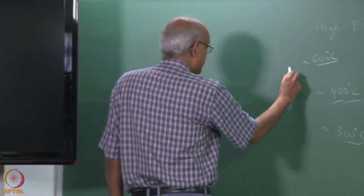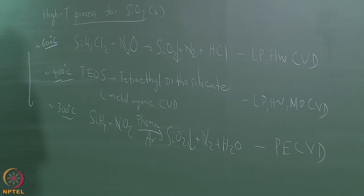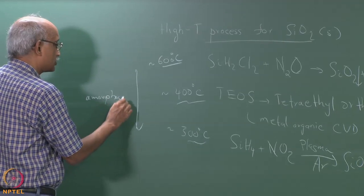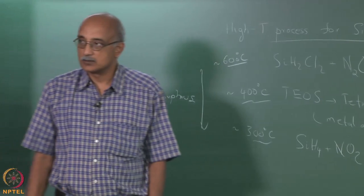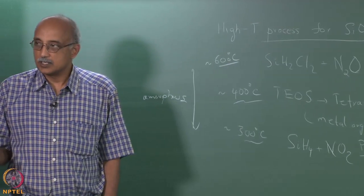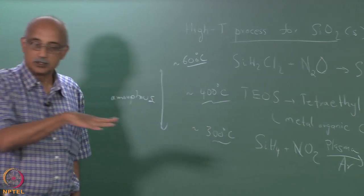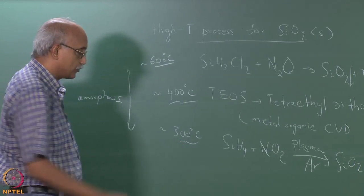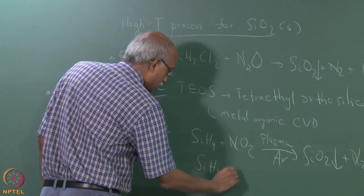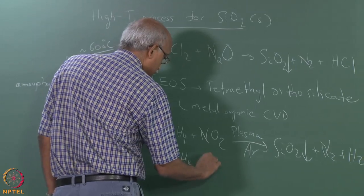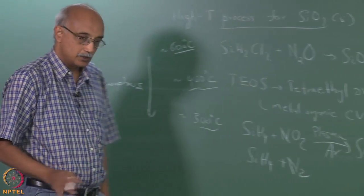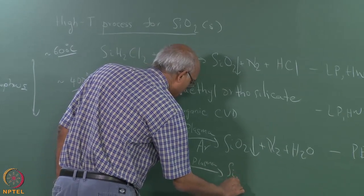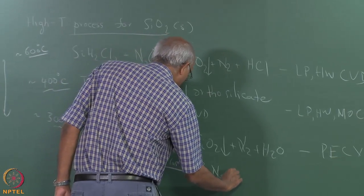As you go from the high-temperature process to PECVD, the films become more amorphous. So depending on how amorphous you want the film to be, you can choose to operate at any of these regimes. For Si3N4, processes are available at various temperature ranges. One widely used process runs at very low temperatures using SiH4 + NH3 under plasma conditions to make Si3N4.